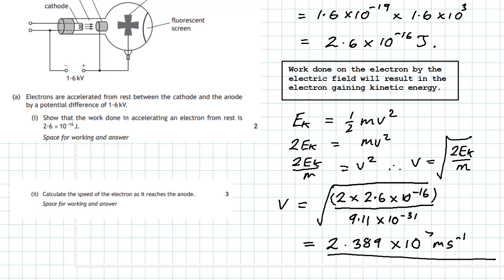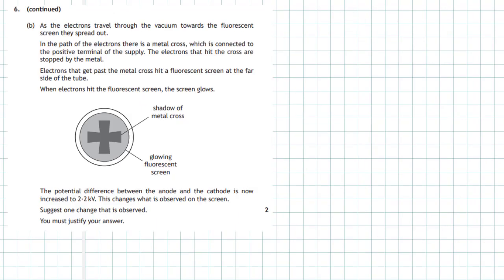Therefore we don't have to worry about any relativity involved. So the speed of that electron that reaches the anode will be 2.389 times 10 to the power of 7 metres per second. Question 6 part B.